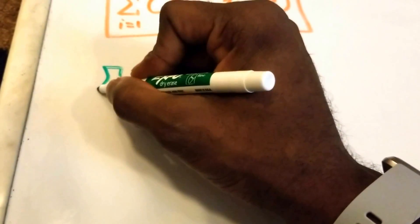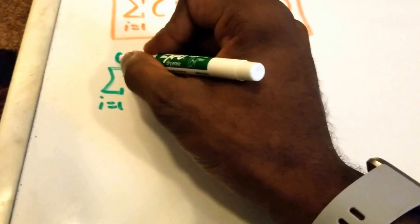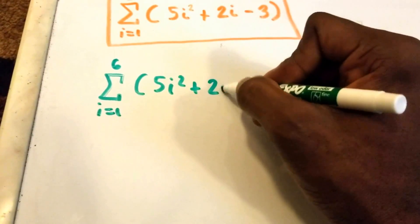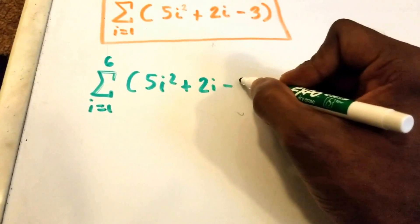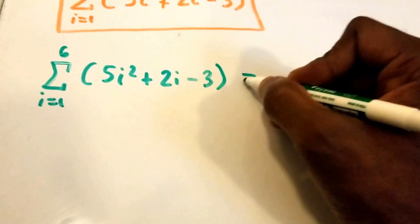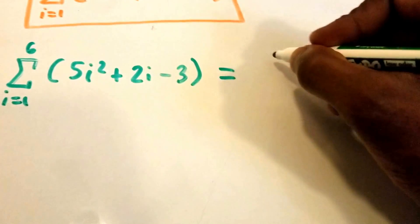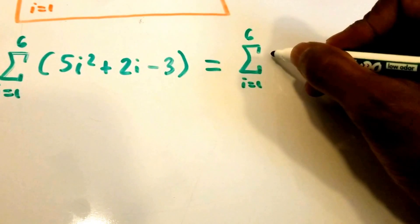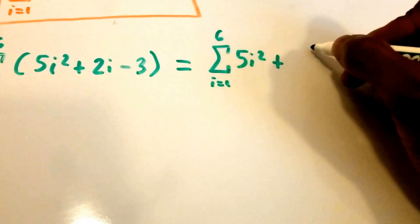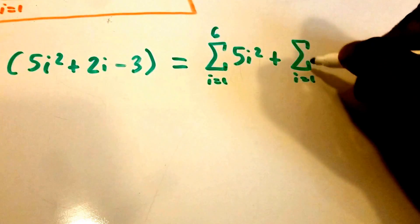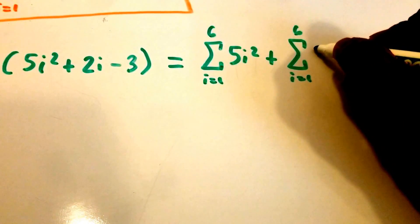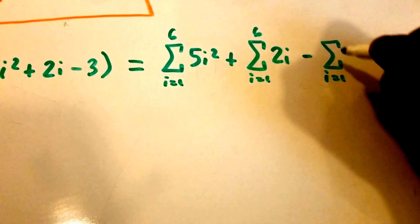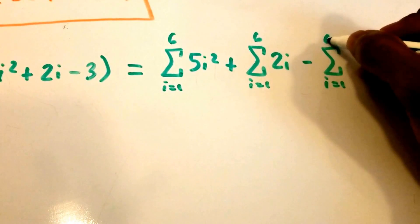First, I'm going to rewrite the summation going from i equals 1 to 6 of 5 times i squared plus 2 times i minus 3. I'm going to use the summation property to break this up, giving us the summation from i equals 1 to 6 of 5i squared, plus the summation from i equals 1 to 6 of 2i, minus the summation from i equals 1 to 6 of 3.